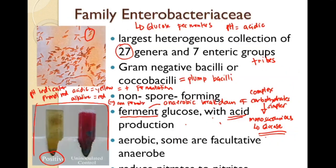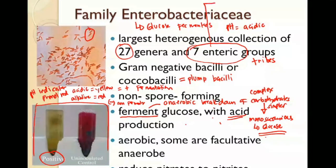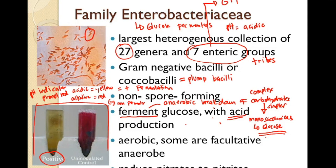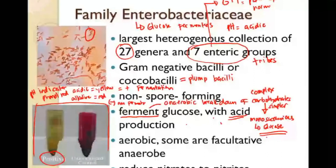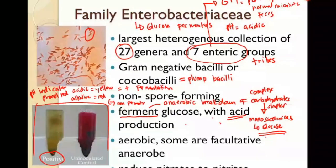The family name is Enterobacteriaceae and we consider them as enterics. The reason why we call them enterics is because they reside in the gastrointestinal tract — they are actually part of the normal microbiota. Some of them are part of the normal microbiota, and they are found in feces. Stool samples are actually made up of enteric bacteria.